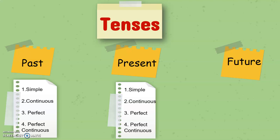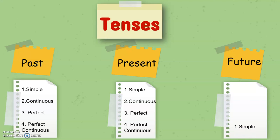Now let's see the future tense sub-parts. First is simple future tense — it shows that the action will take place in the future. Next is future continuous — it shows that the action is expected to continue for some time in the future. And future perfect — it shows that an action will be completed in the future. Now let's see the formula to convert sentences from simple to continuous, from continuous to perfect, from perfect to perfect continuous, and back to simple.